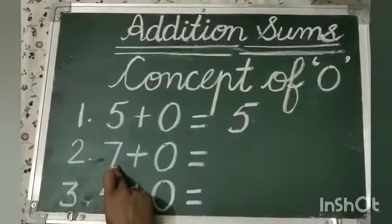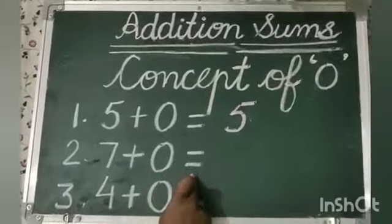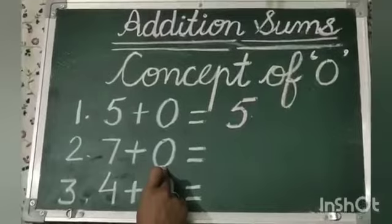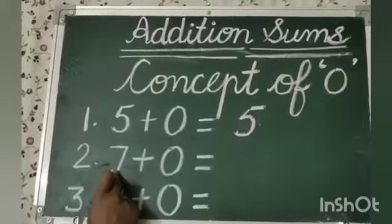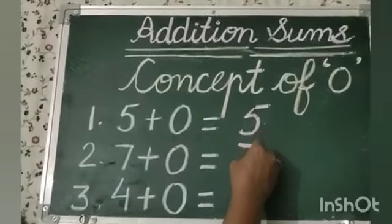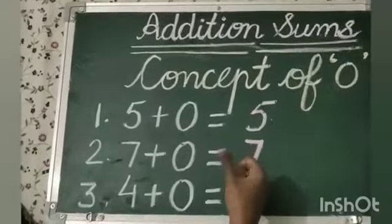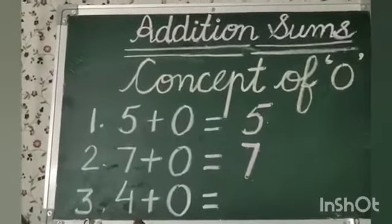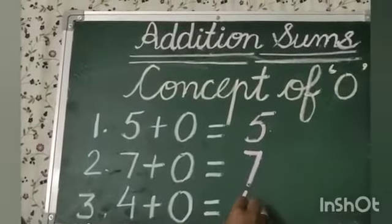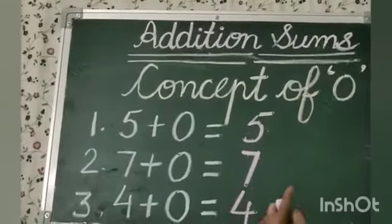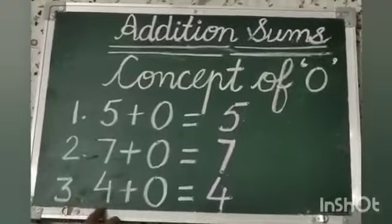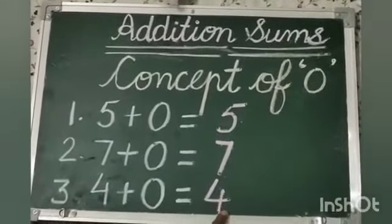Now second: seven plus zero is equal to what? When we add zero in seven, seven will be the answer. So seven plus zero is equal to seven, because zero means no number. Now third: four plus zero is equal to four. When we add zero in any number, the same number will be the answer.